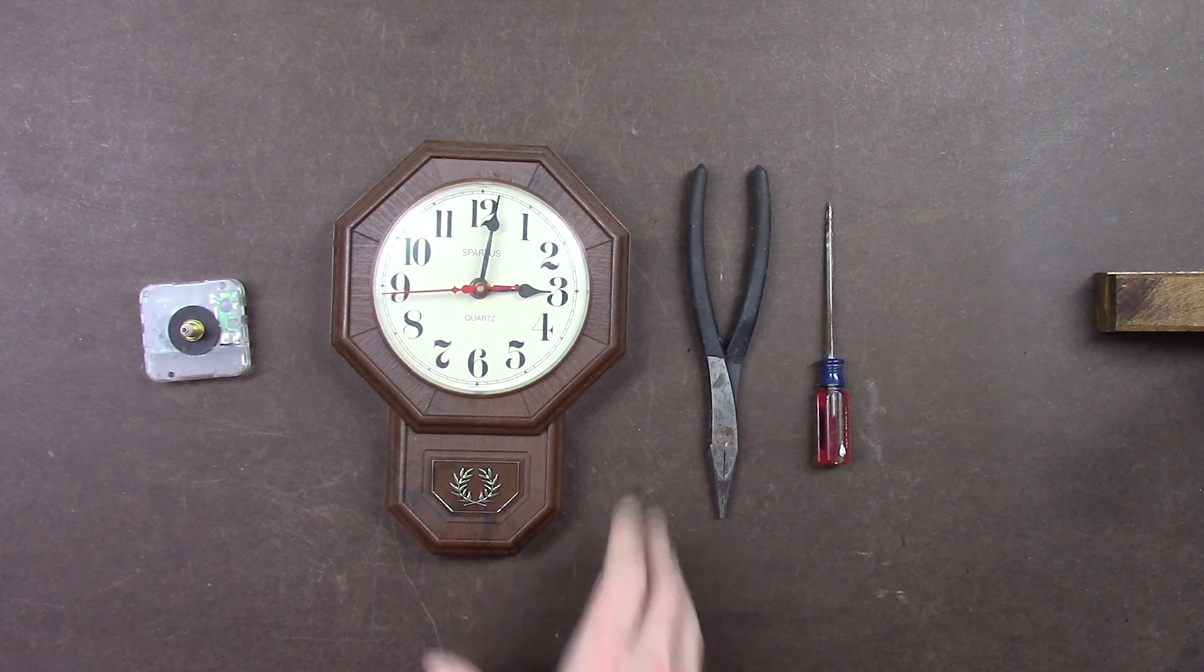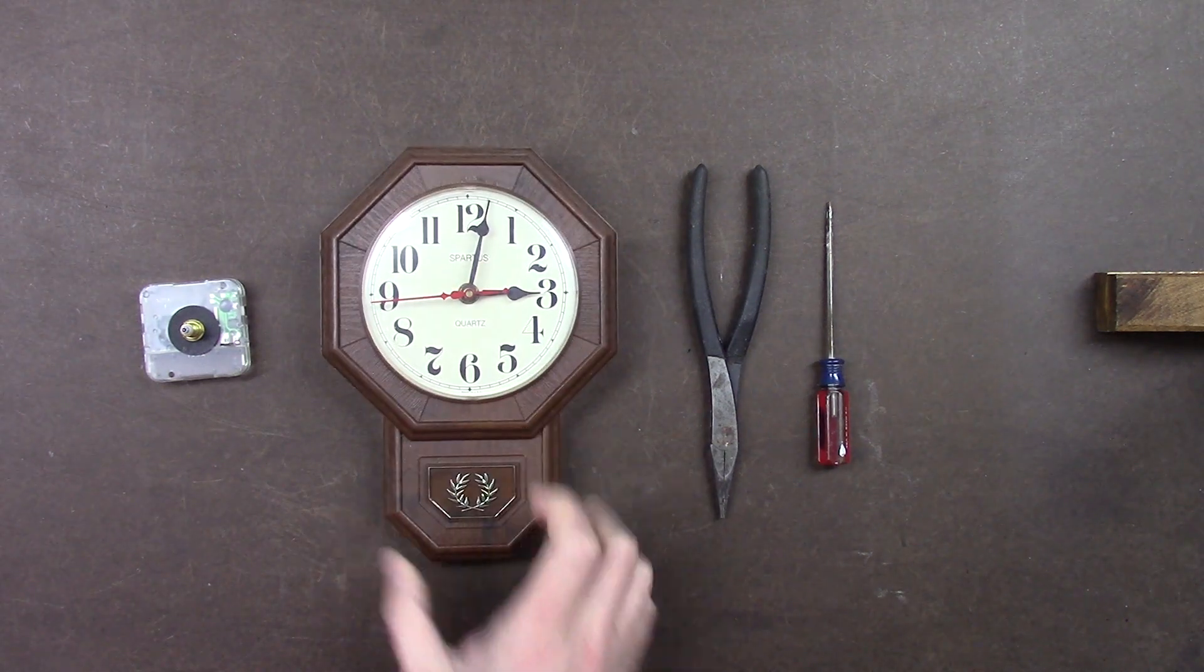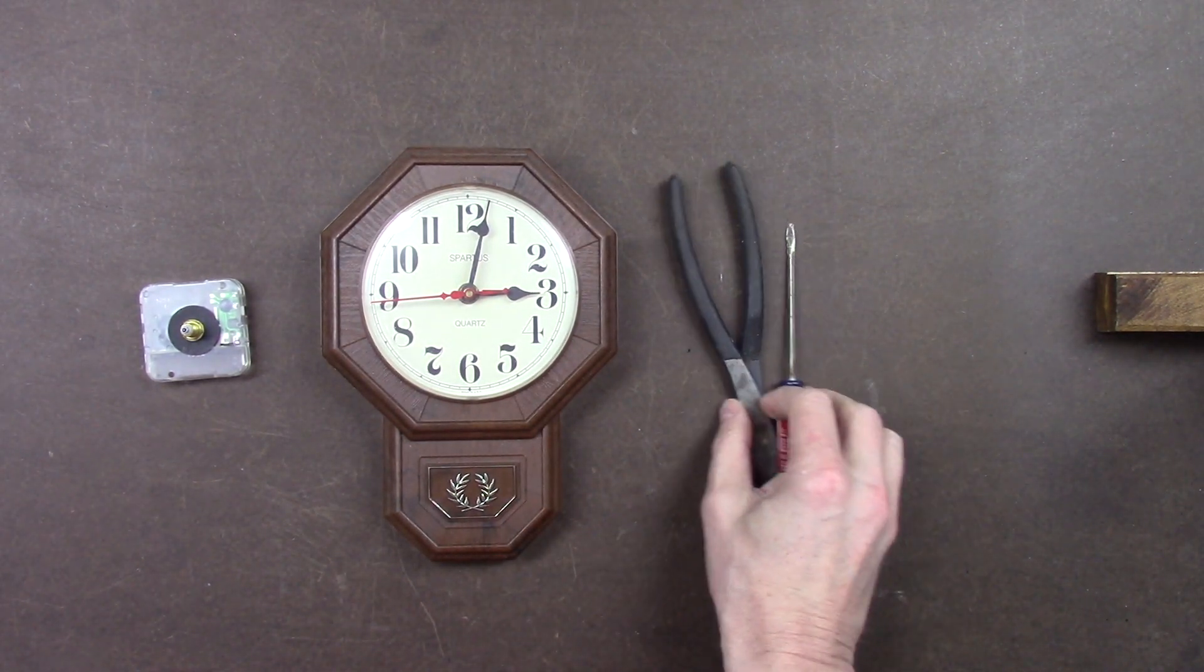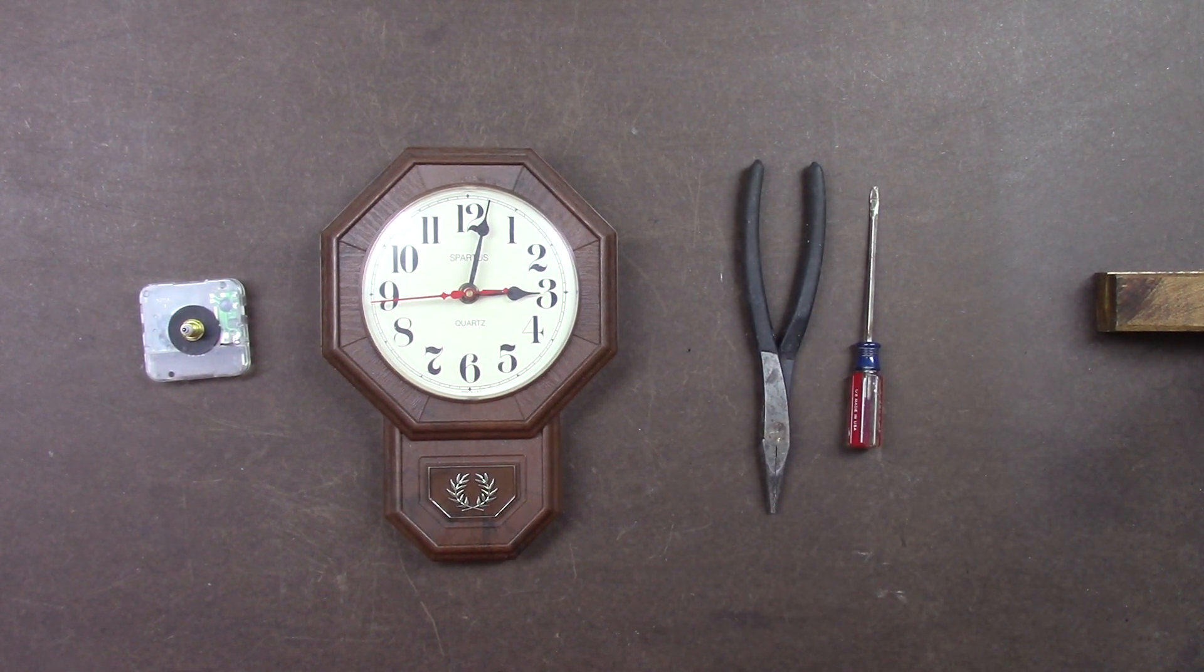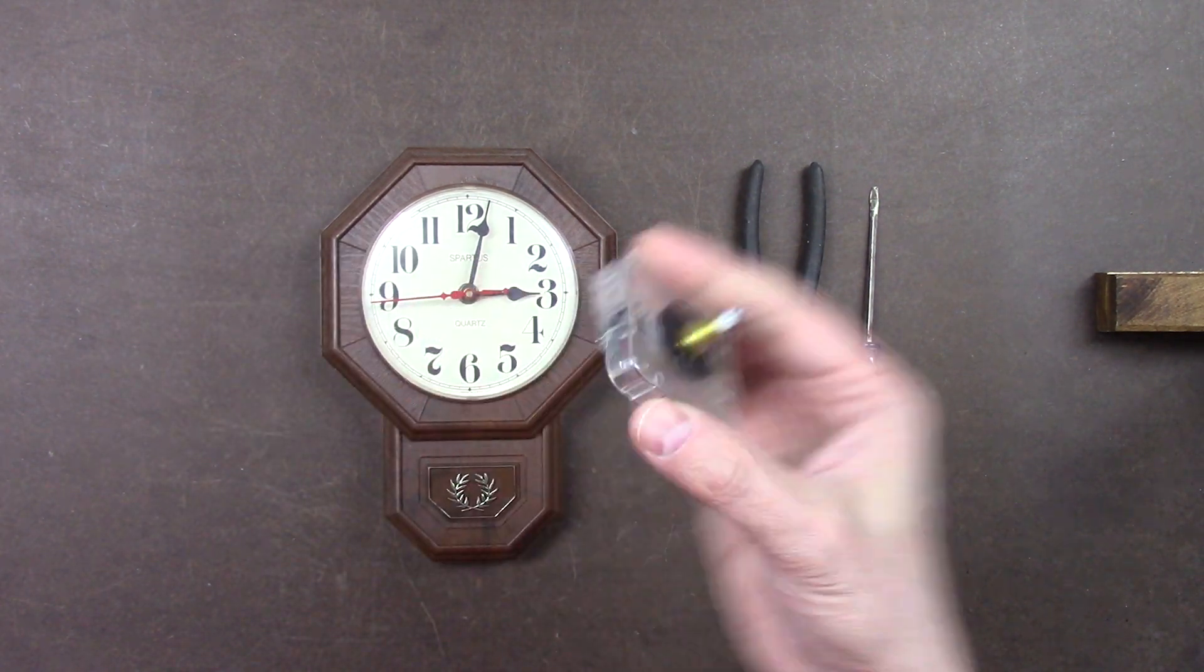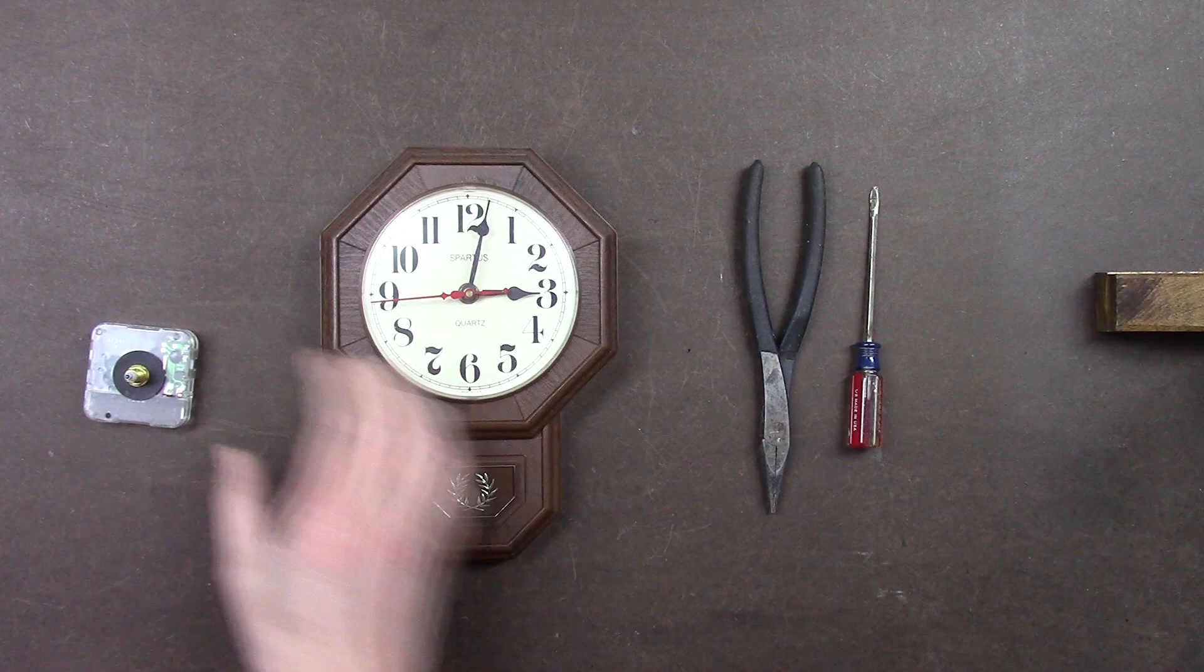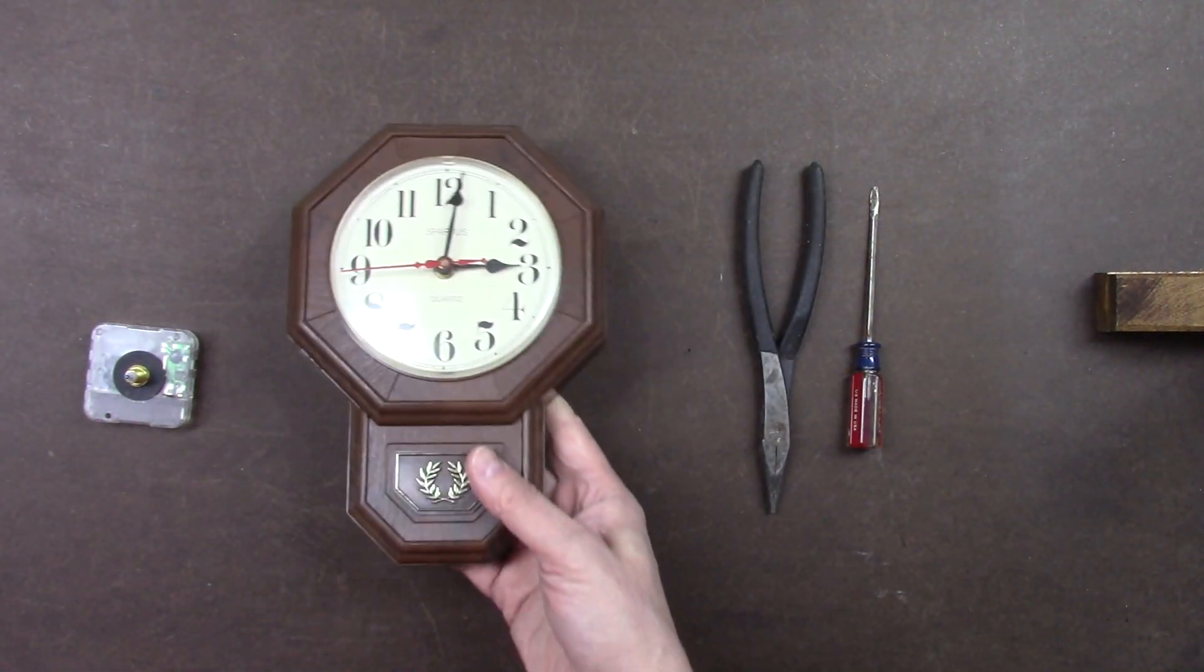If you want to find a new clock movement, just do an internet search for quartz clock movement. There's a bunch of companies out there that sell them, and it all depends on how much you want to pay. A new movement like this might cost about $5 or $10, and a new clock might be $5 or $10 if you buy a cheap Chinese import.